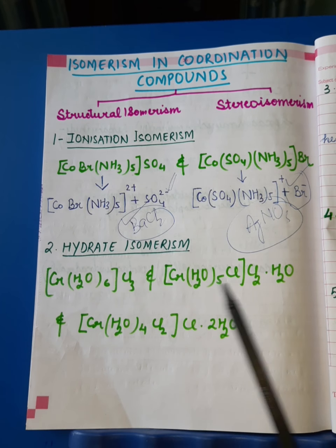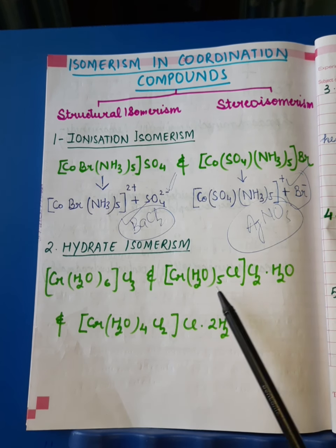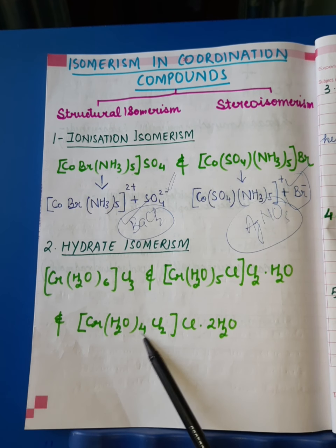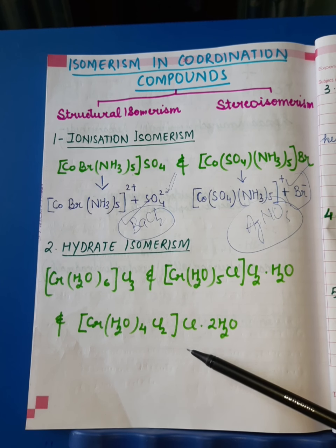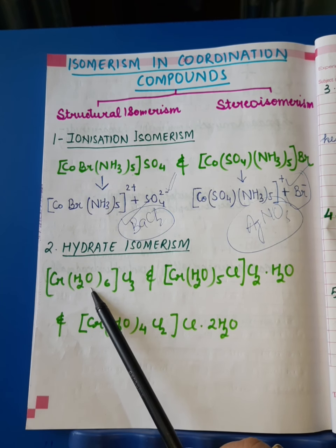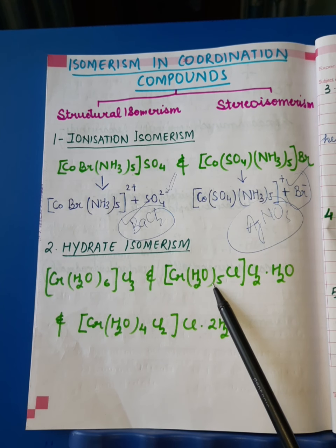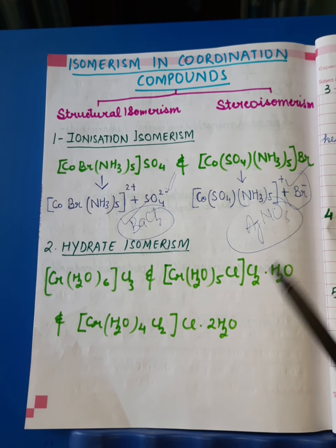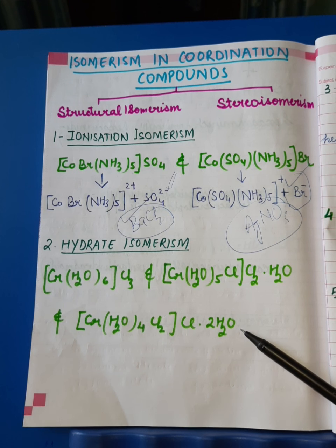There are three examples here. The first is hexaaqua chromium(III) chloride. In all three complexes, the key difference lies in the behavior of water molecules. In the first compound, six water molecules act as ligands. In the second compound, which has exactly the same molecular formula, five water molecules are ligands while one water molecule is water of crystallization. In the third example, four are ligands whereas two are water of crystallization.